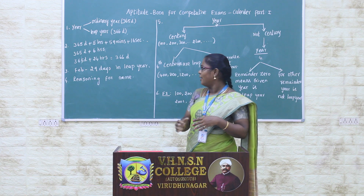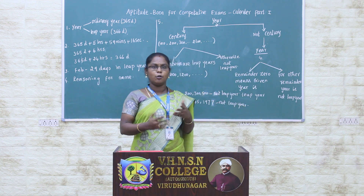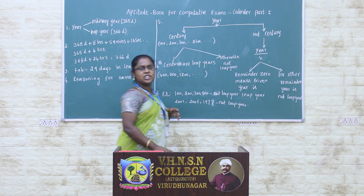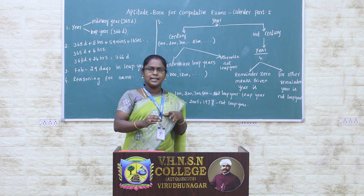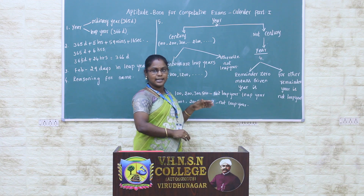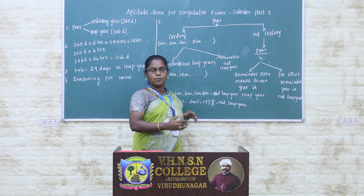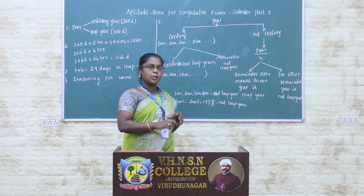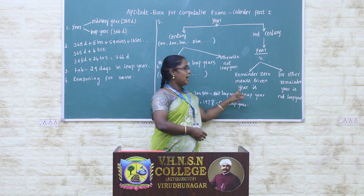Now, we move to the problem section. Before entering into that, how can we check if a given year is a leap year or not? First, consider that year and check whether it is a century year or not. Century years are 100, 200, 300, 400, and so on. If it is not a century year, divide that year by 4. If we get remainder 0, then the given year is a leap year. If we get remainder 1, 2, or 3, then that year is not a leap year.